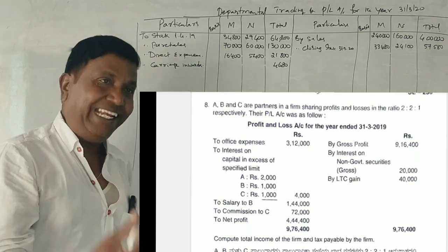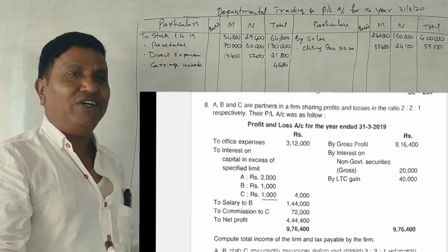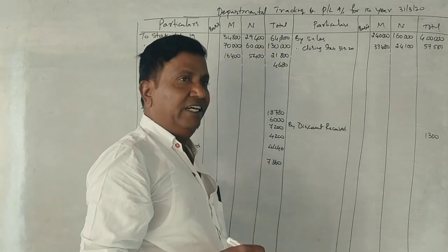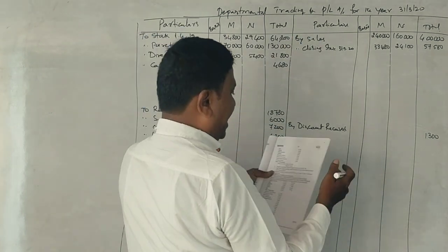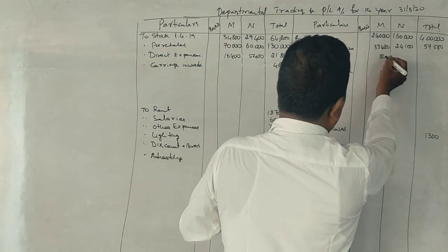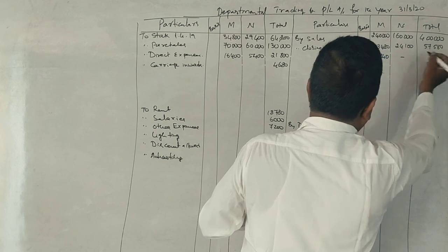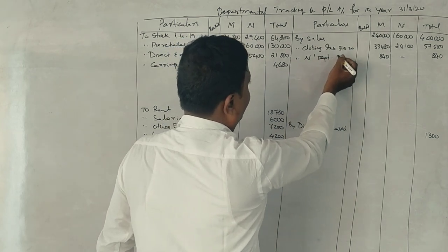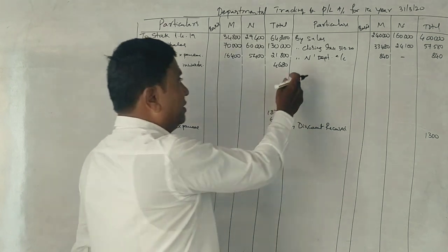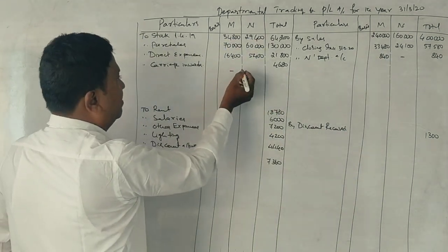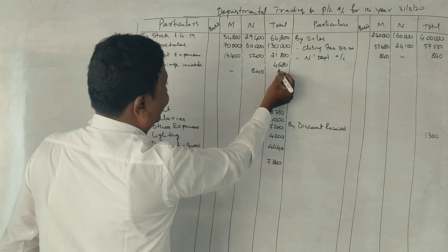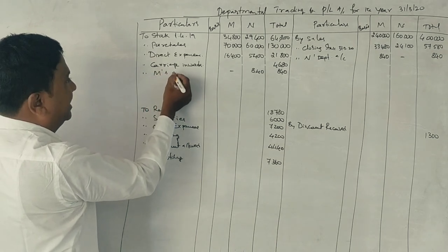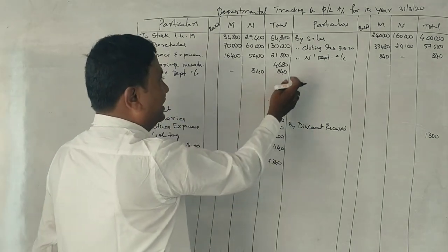Department M is selling goods to Department N. What is the transfer? It is a sale. Who is selling? M Department is selling — that is the credit side. M Department sells, and N Department purchases. So this transaction covers both selling and purchasing between the two departments.